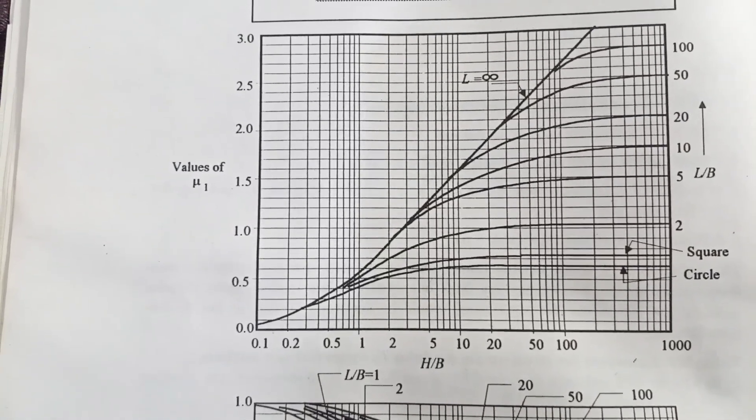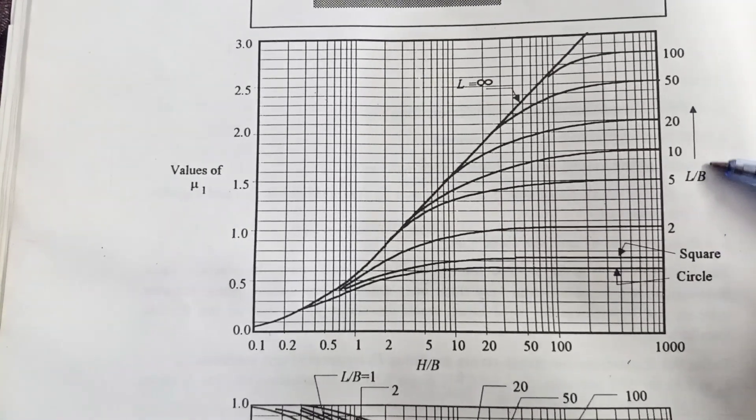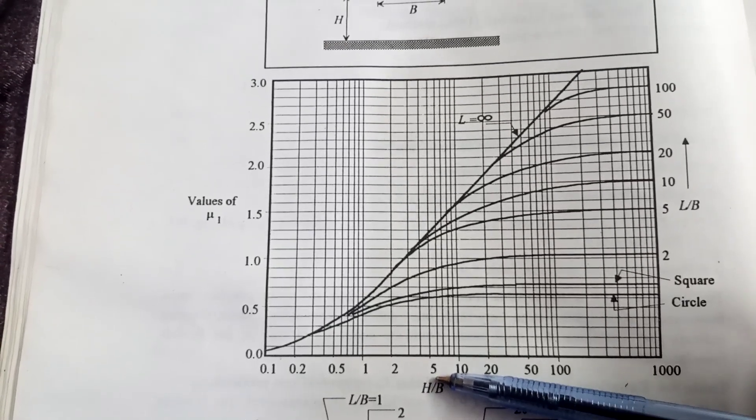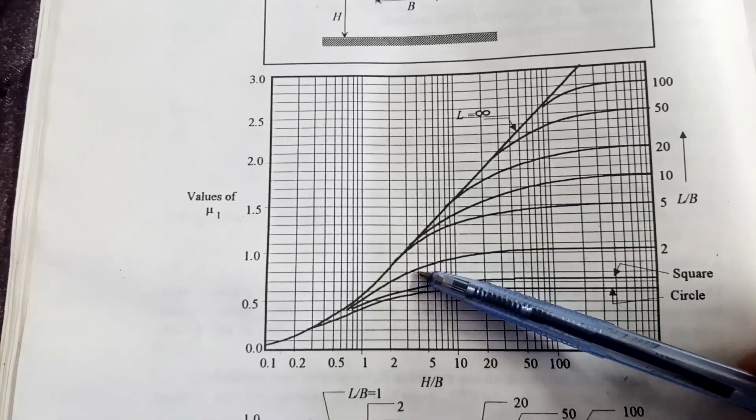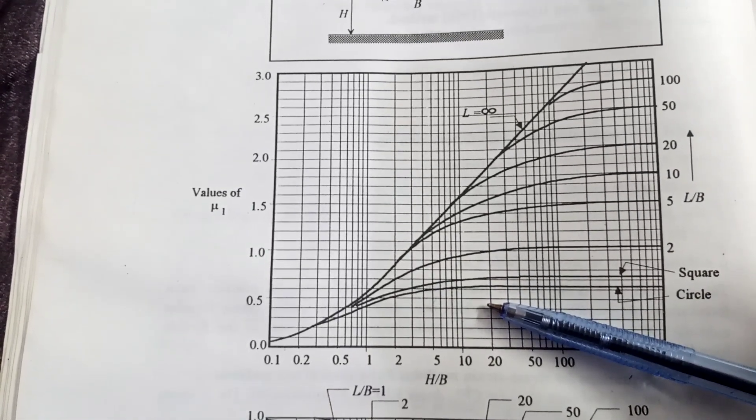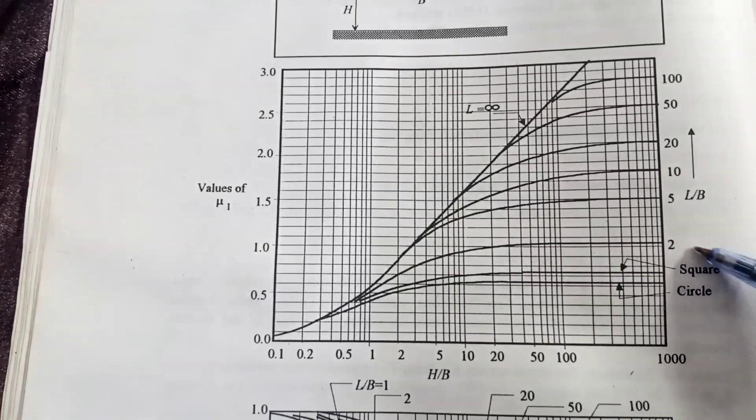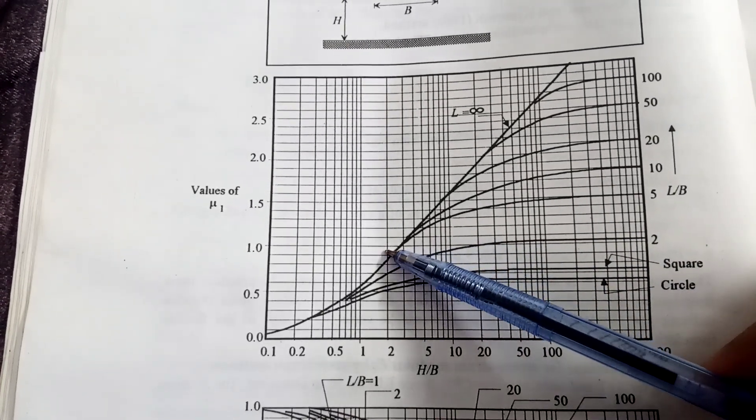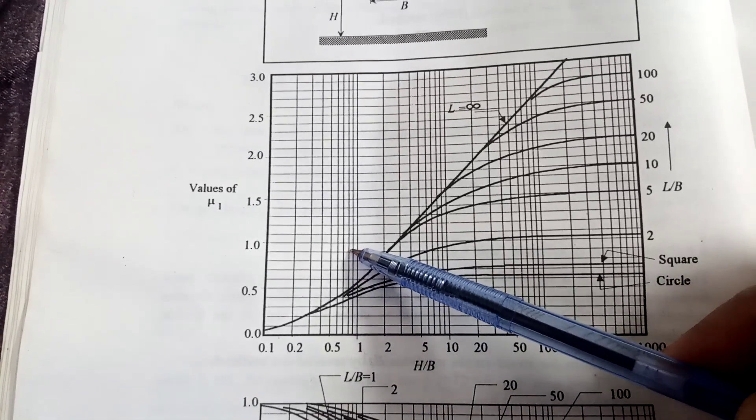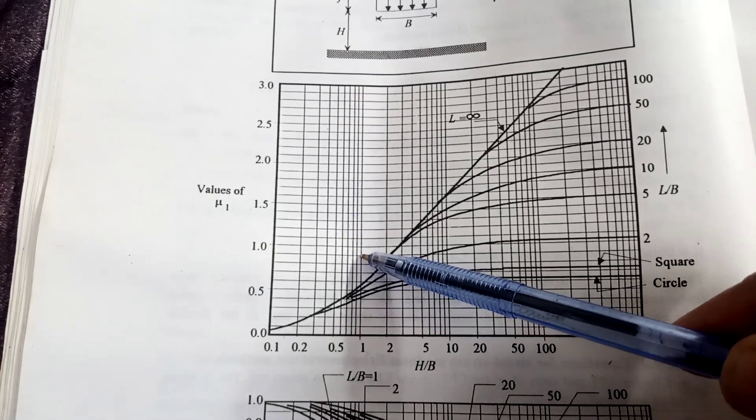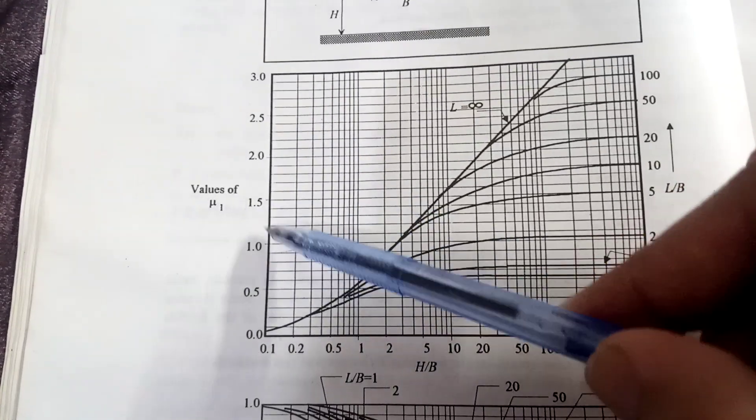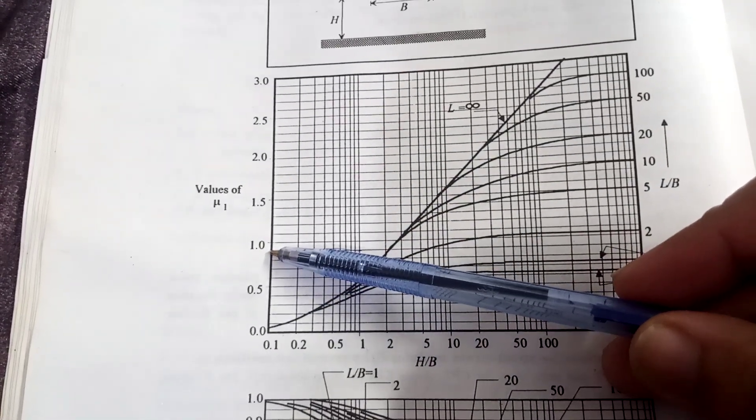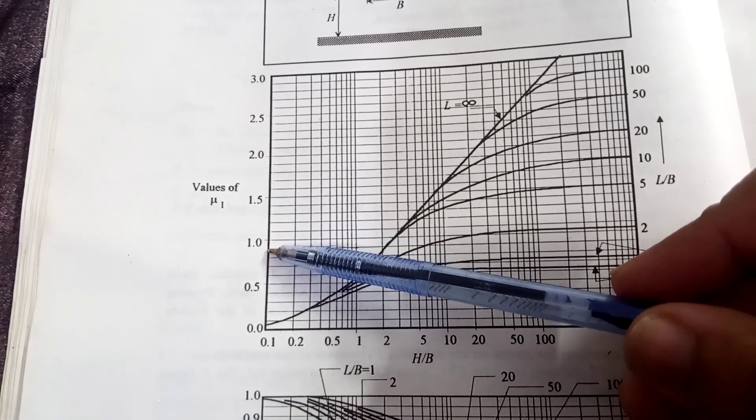We will calculate the value of u1 from this graph. Here you can see on the right side of this graph is L over B, and at the bottom is H over B. So with linear interpretation we will calculate the value of u1. Here in this case, L over B is equal to 2, so this is 2, and H over B is 1, so we move like this until 1 arrives at the x-axis. So the value of u1 here will be equal to u1 comes out to be equal to 0.98, because above this it is 1, so below it is 0.98.